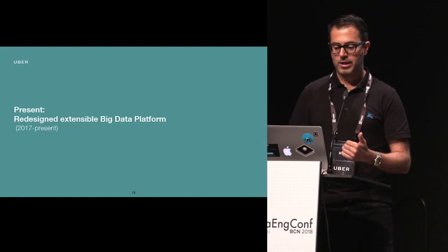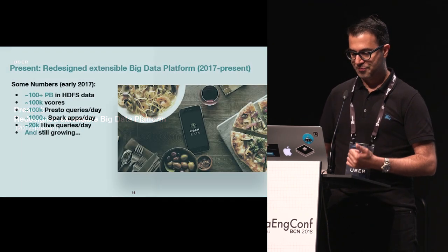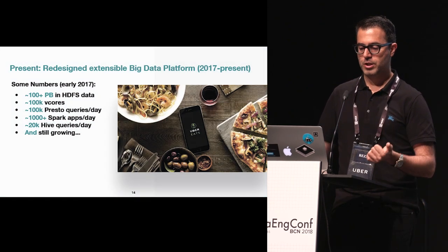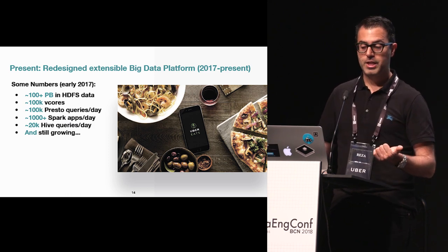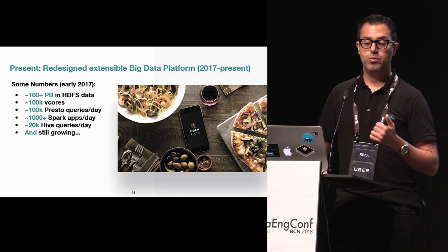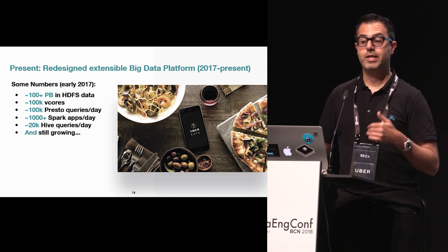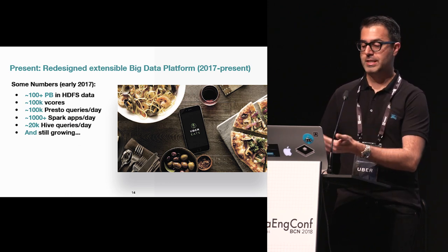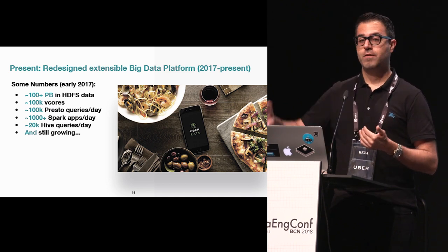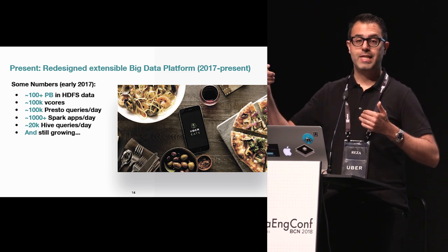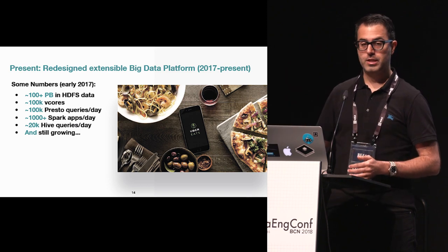By early 2017, we had several hundred petabytes of data in HDFS, a Hadoop cluster growing to a few hundred thousand V-cores, and several hundred thousand batch jobs and queries running daily. New businesses like Uber Eats and Uber Freight were coming online, and the amount of data was still growing exponentially. For the first time, we had some headroom to study our datasets and decide what we needed to build something extensible that would last long-term.